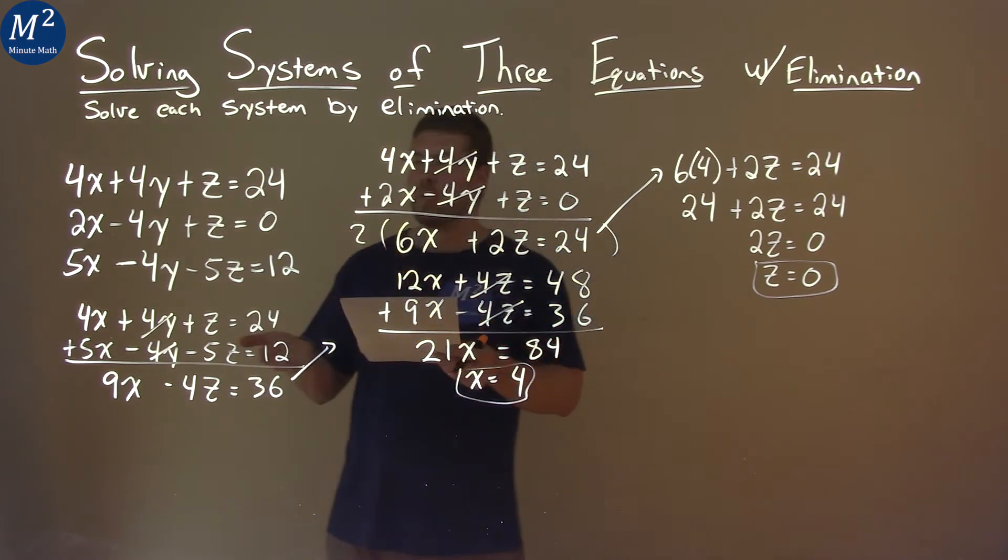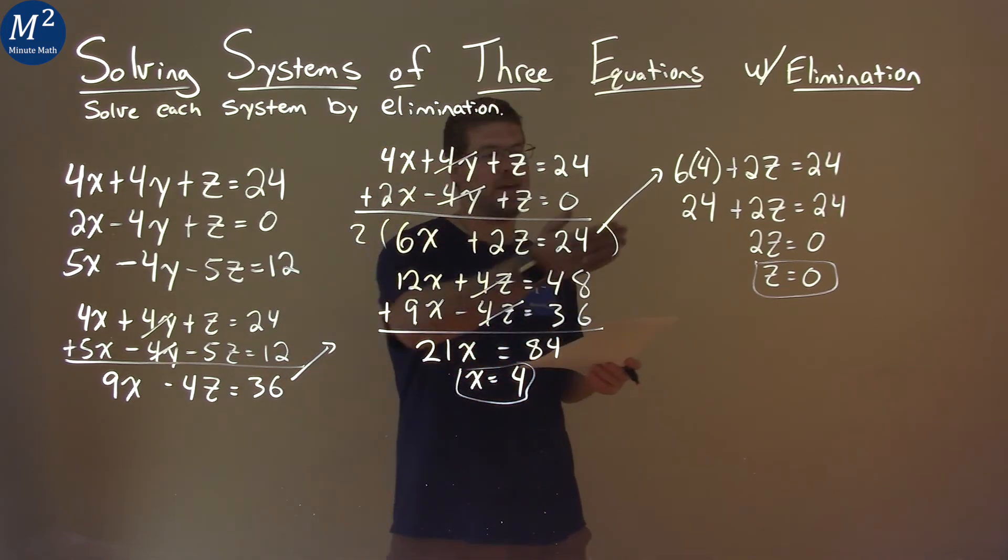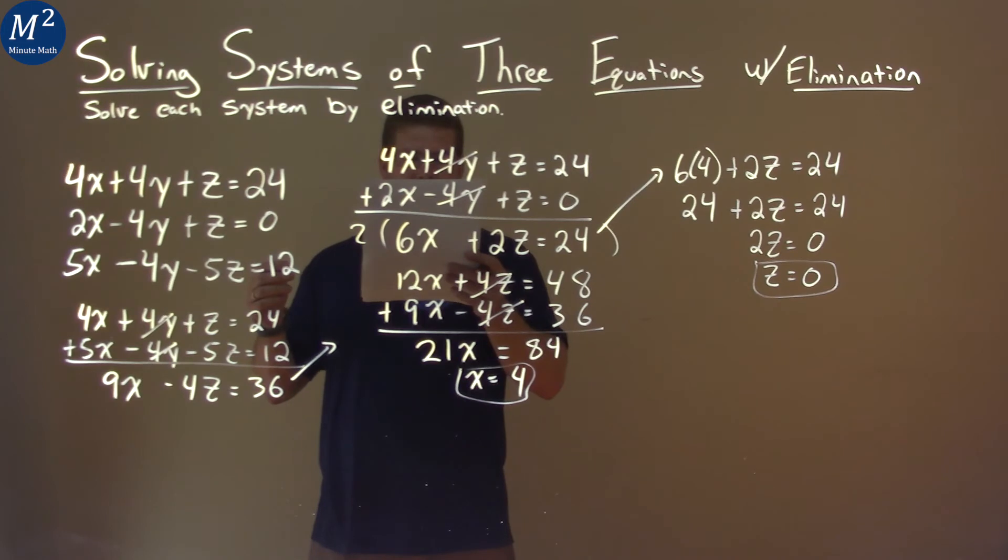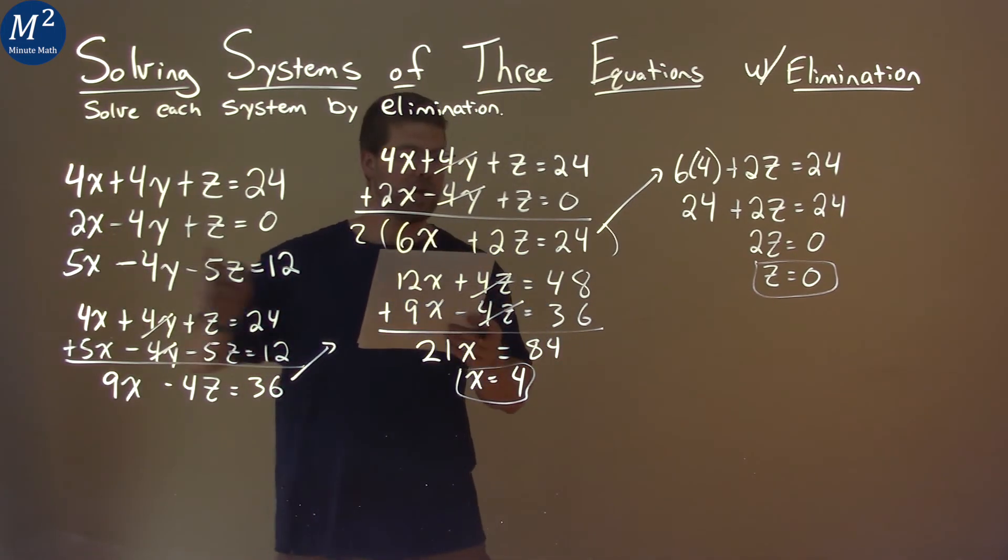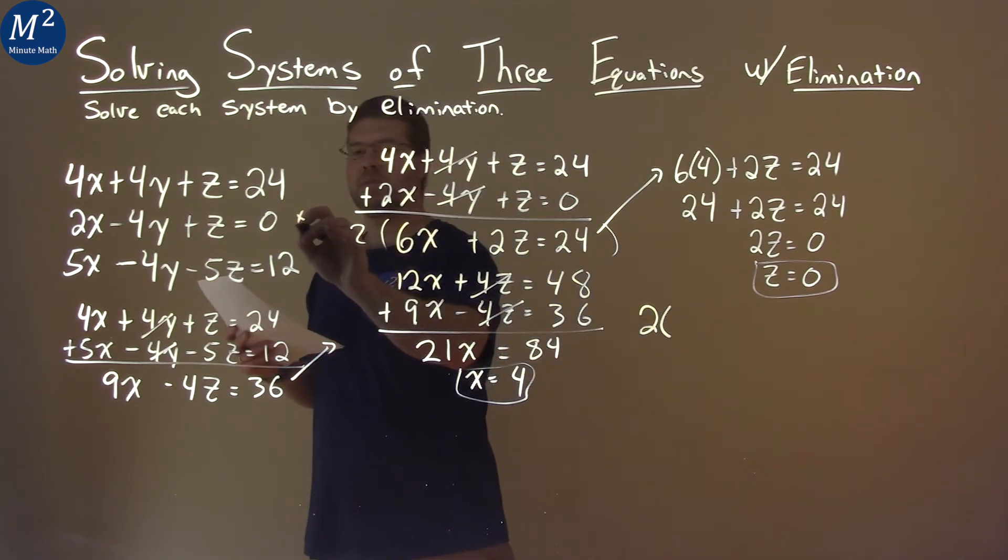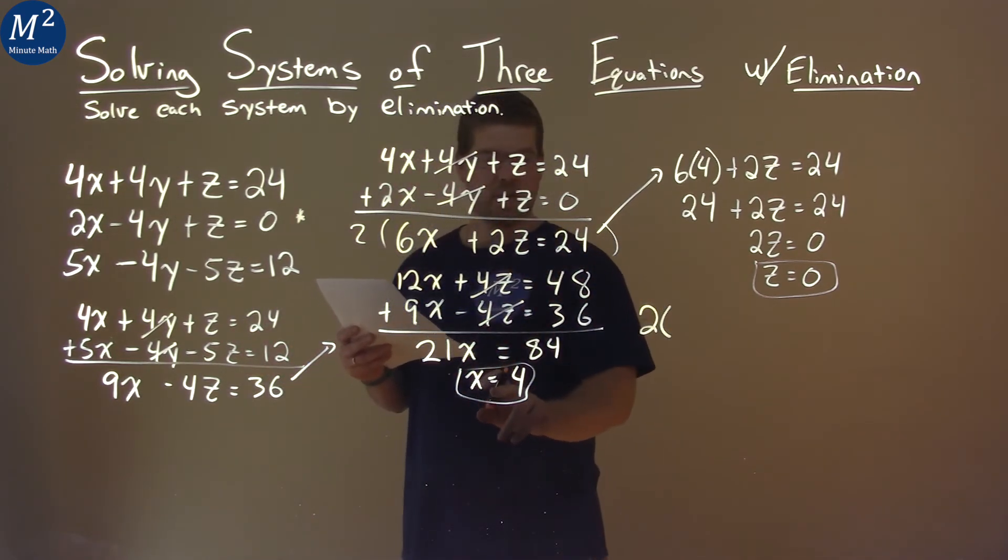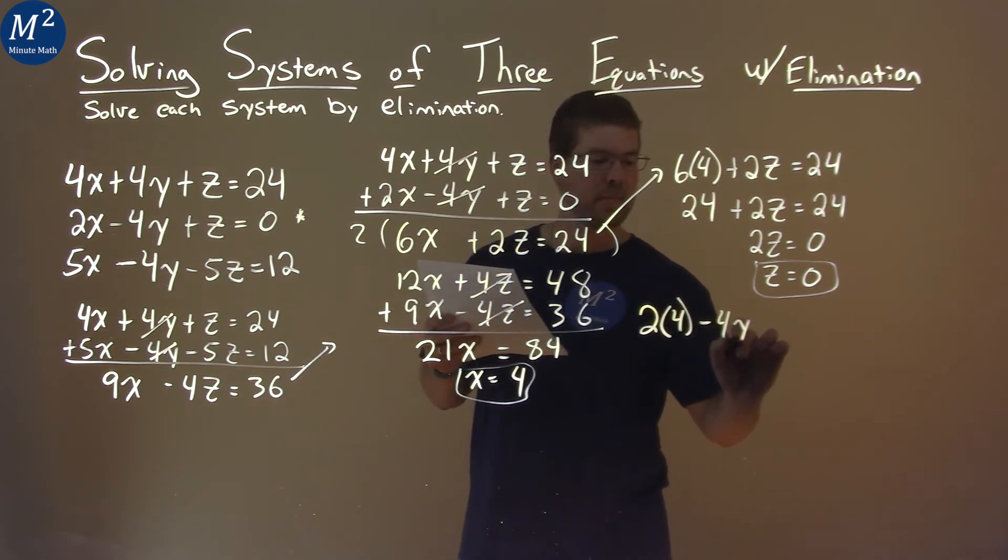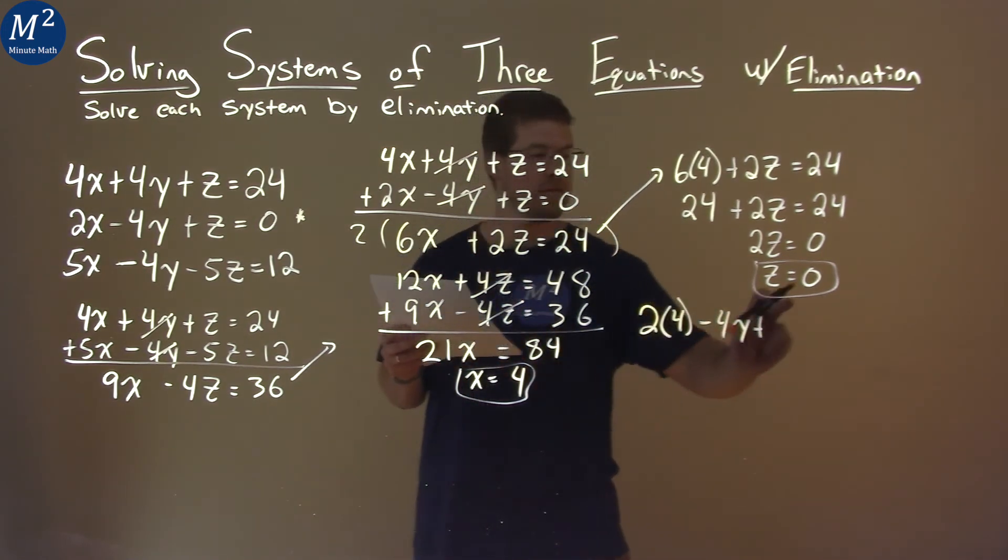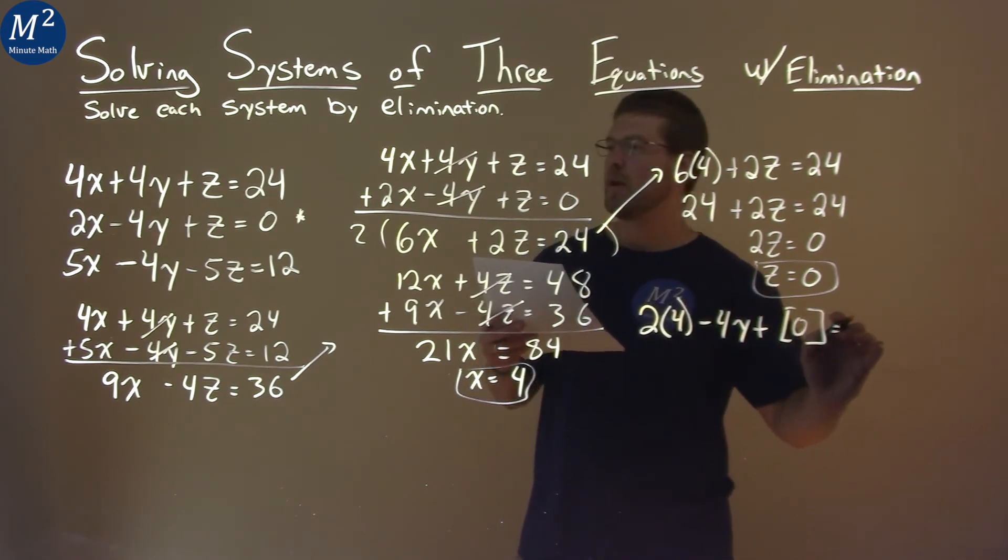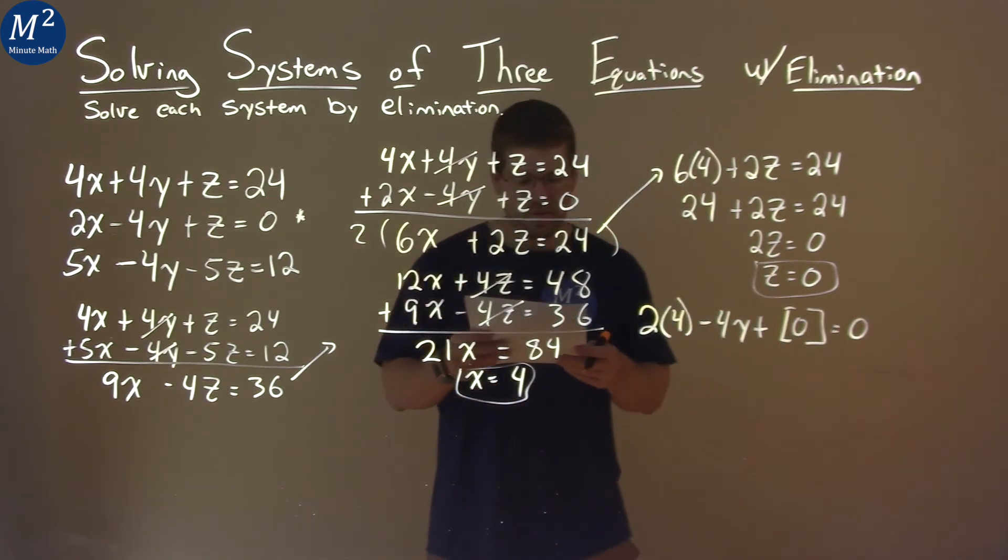So we take one of our equations and we're going to plug in x and z for our variables. I picked here the second equation. So let's rewrite that second equation here. But instead of x, I'm putting a 4. And then we have minus 4y plus, and instead of z, I'll put a 0. And then we have 0 at the end. And now we have to solve for y.